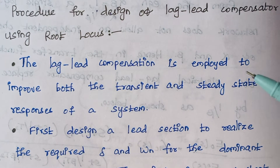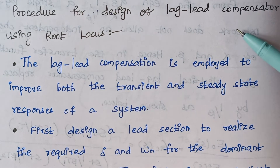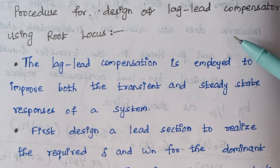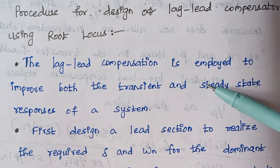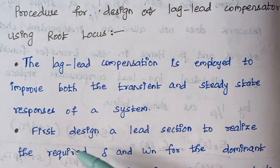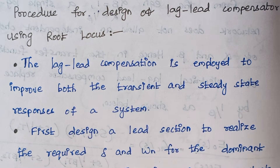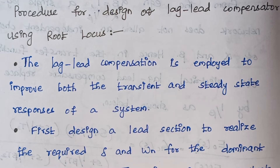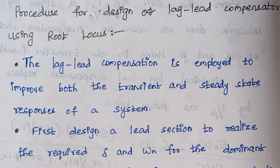What is meant by lag-lead compensation? This compensator has both lag performance as well as lead performance. The lag-lead compensation is employed to improve both the transient and steady-state response of the system. Whenever we need improvement in both the steady state as well as in transient state, we use lag-lead compensation.